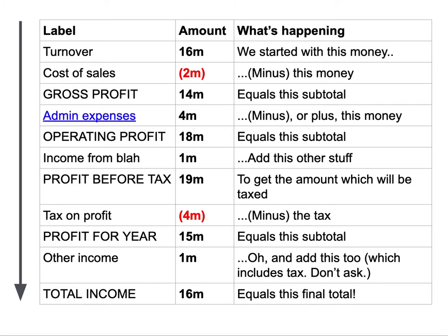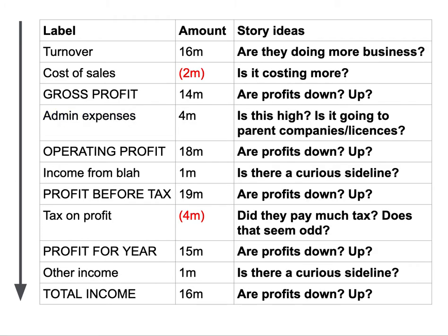Each of these lines is also a potential story. How much business a company is doing might be a story; how much it costs them to do business might be a story. Obviously profit is a story, tax is a story, and income is a story as well. Gross profit is quite often used because it's not distorted by admin expenses — admin expenses being costs unrelated to the core business, such as a licensing fee to a parent company. So each line could be a potential story: profits going up or down, paying too much or too little tax, doing more or less business, costs going up or down, or curious sidelines they're making income from.